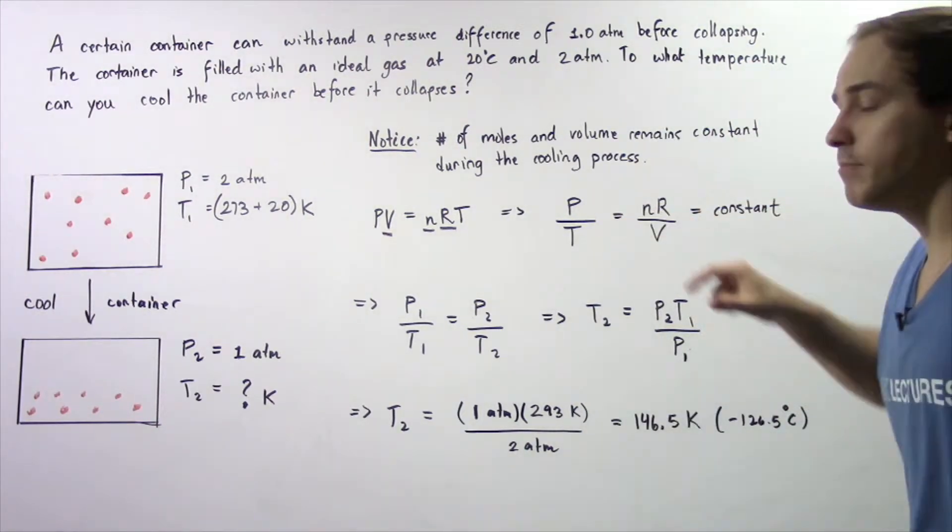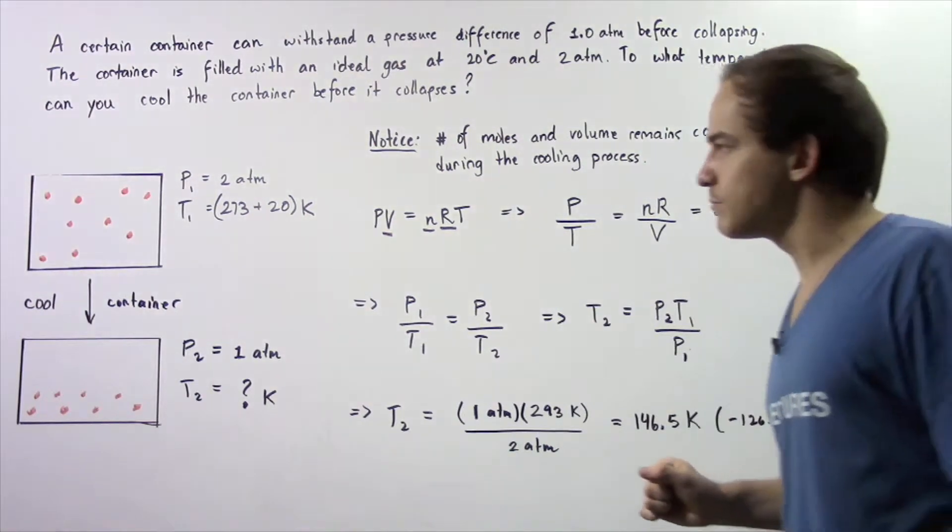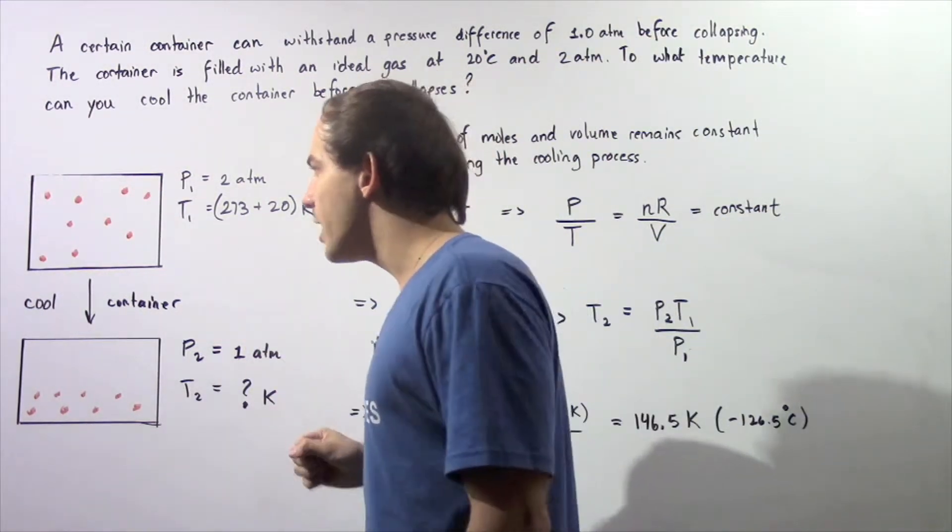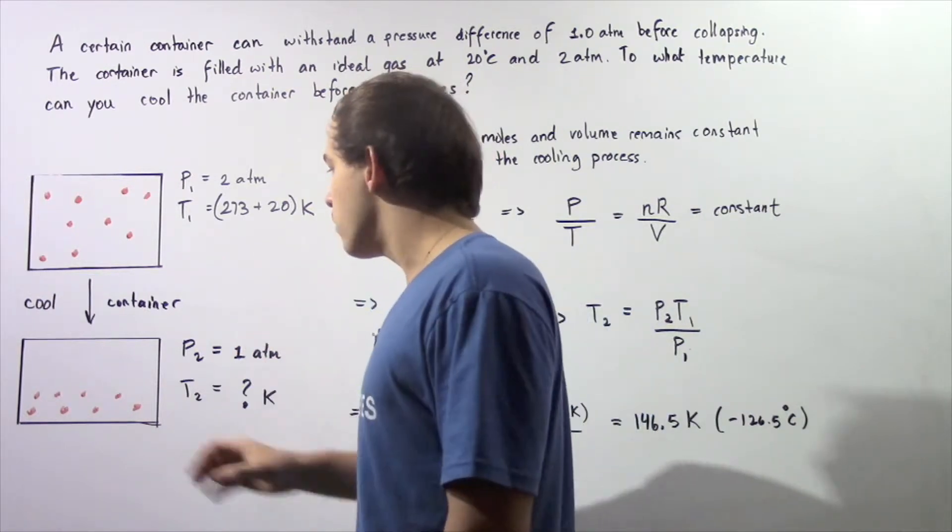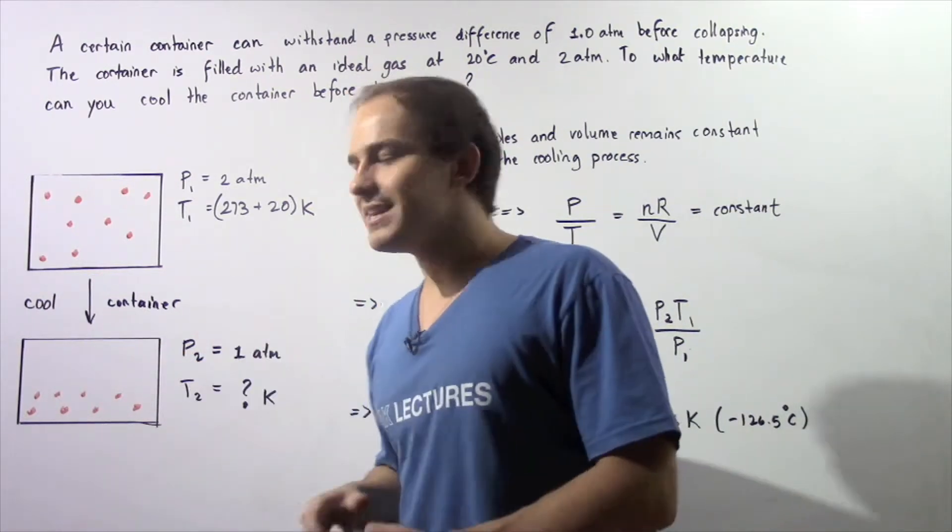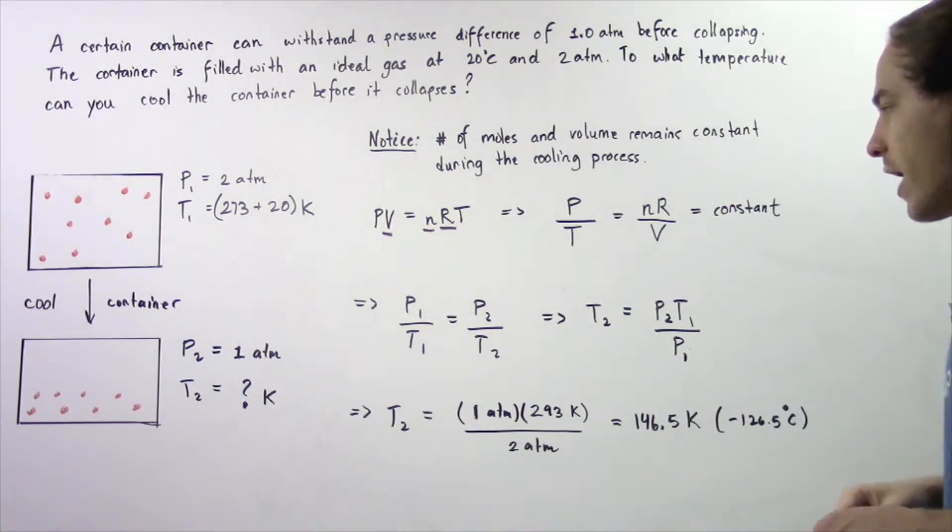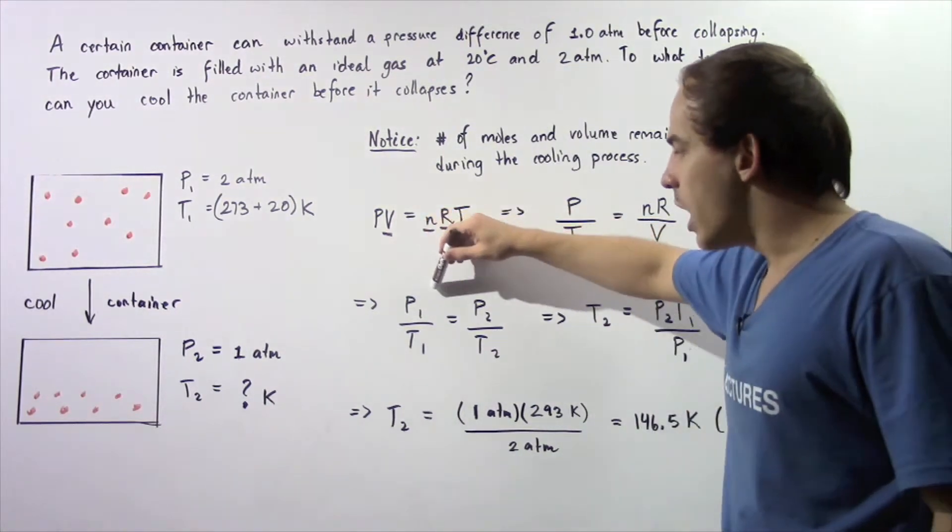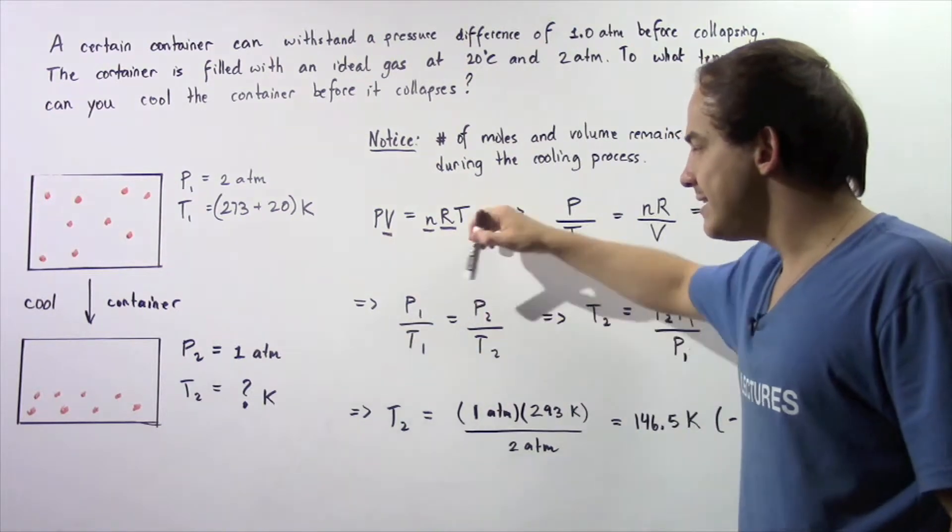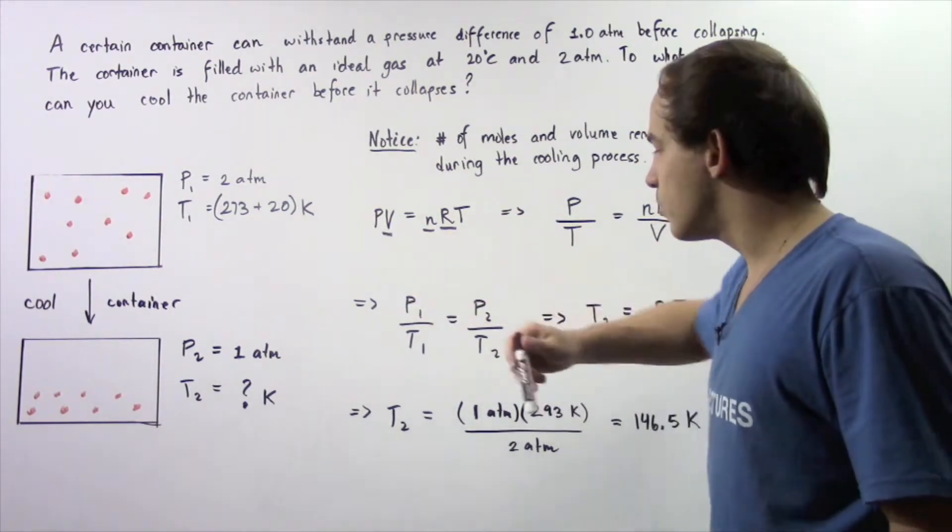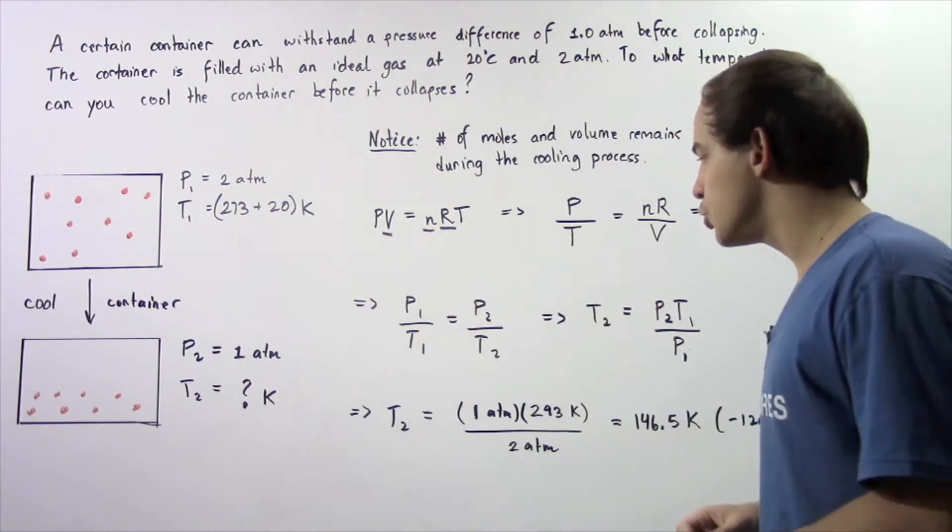So the ratio of pressure to temperature in system 1 is equal to the ratio of pressure and temperature in system 2. And that's exactly where we get the following equation: P1 divided by T1 is equal to P2 divided by T2, where 1 is system 1 and 2 is system 2.